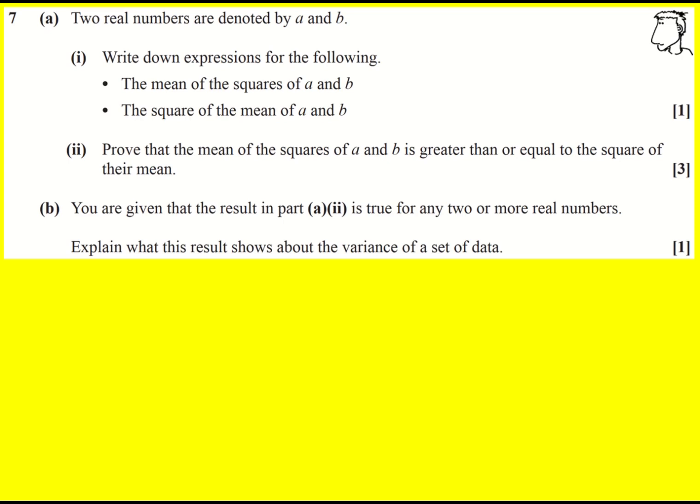Two real numbers are denoted by a and b. Write down expressions for the mean of the squares of a and b. So the mean of the squares - we've got the squares a squared and b squared. The mean is if we add them together and divide by two.